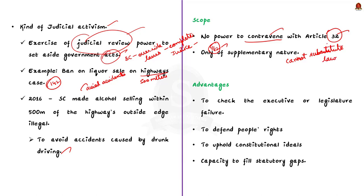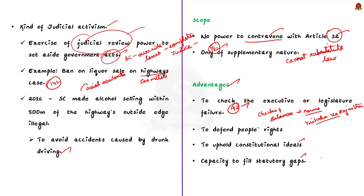Now let's see the advantages of Article 142. Firstly, whenever the executive or legislature fails to defend people's rights and uphold constitutional ideals, the judiciary has used its power under Article 142. As the constitutional protector, Article 142 gives the Supreme Court the capacity to fill statutory gaps. It also establishes a system of checks and balances for the government's other branches. For instance, the Supreme Court established norms to safeguard women from sexual harassment at the workplace in the Vishaka v. State of Rajasthan case, and in the Bandhua Mukti Morcha case, the Supreme Court handed down a landmark verdict on India's bonded labour system.